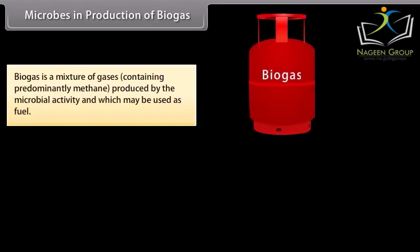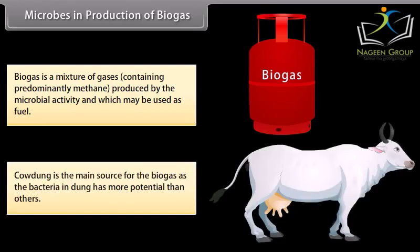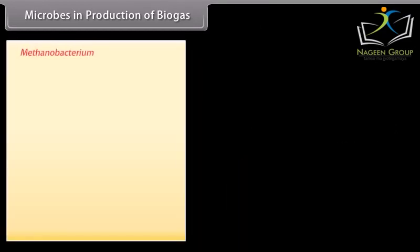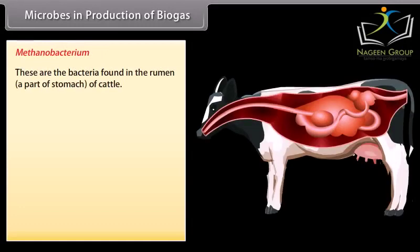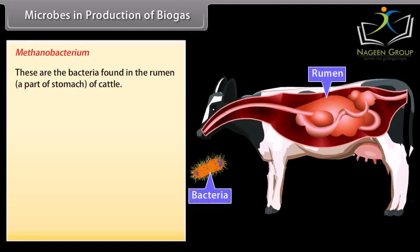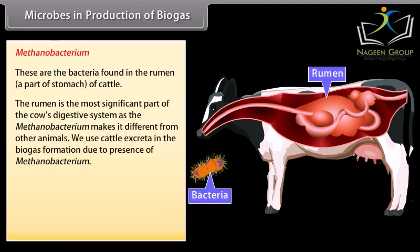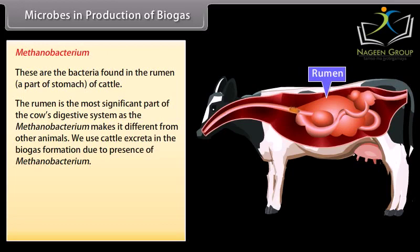Microbes in production of biogas. Biogas is a mixture of gases containing predominantly methane, produced by microbial activity, which may be used as fuel. Cow dung is the main source for biogas, as the bacteria in dung have more potential than others. Methanobacterium are bacteria found in the rumen — a part of the stomach of cattle. The rumen is the most significant part of the cow's digestive system, and Methanobacterium makes it different from other animals. We use cattle excreta in biogas formation due to the presence of Methanobacterium.